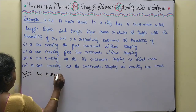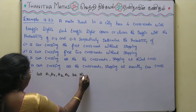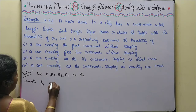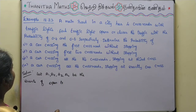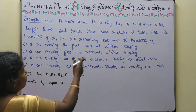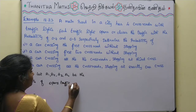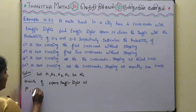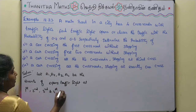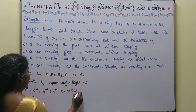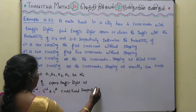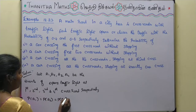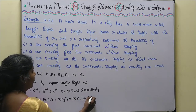Let A1, A2, A3, A4 be the events of an open traffic light at the 1st, 2nd, 3rd, and 4th crossroad respectively. Then P(A1) = P(A2) = P(A3) = P(A4) = 0.4, since these events are independent.